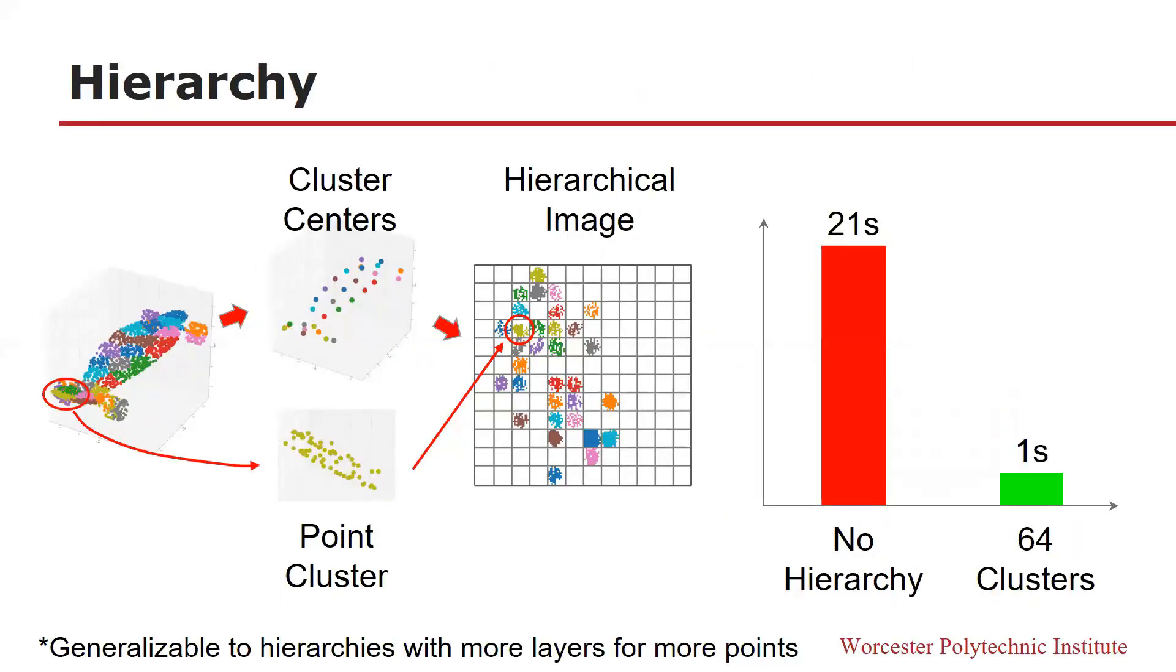Since the time complexity of the point image generation is n-squared, as the point size grows, it will take even longer for point cloud image generation. To accelerate the process, we propose a hierarchical scheme that maps points layer by layer. Initially, we use k-means to separate points into clusters, and then we generate images for each cluster and cluster centers.